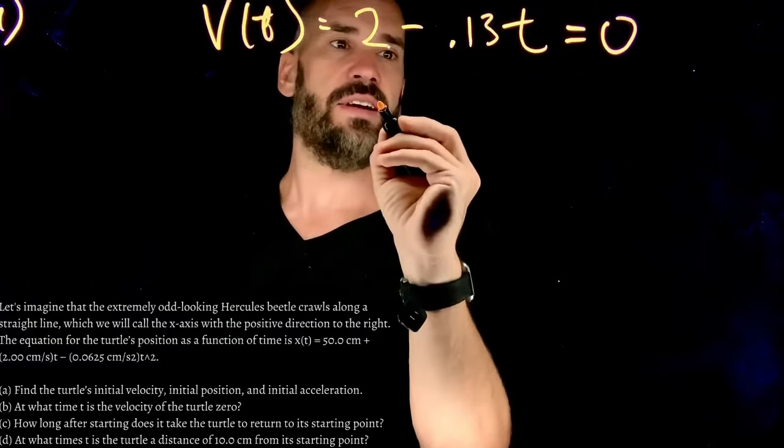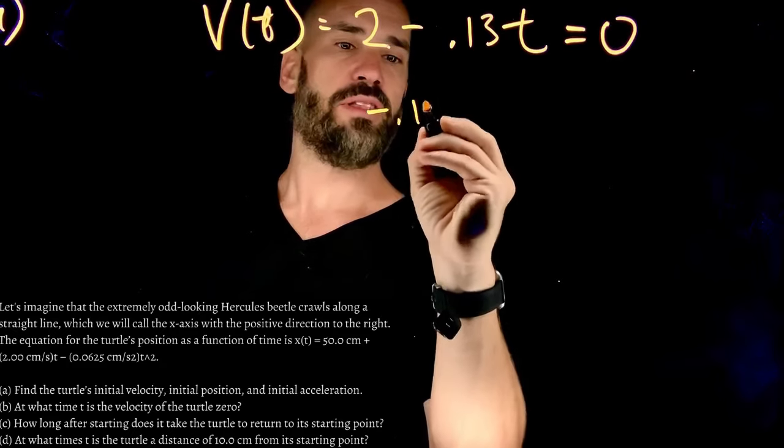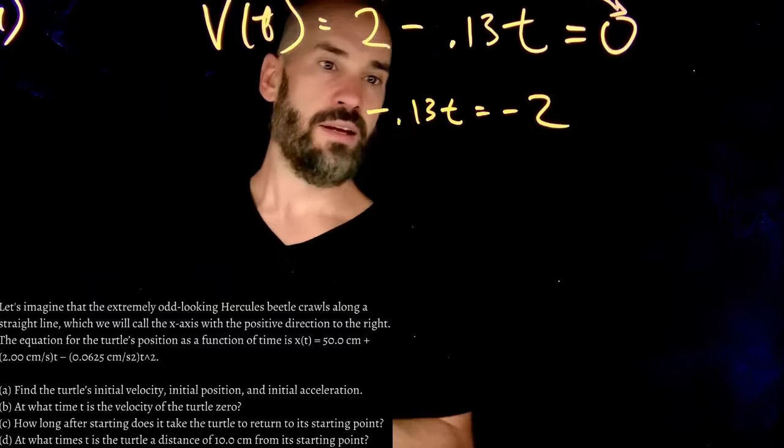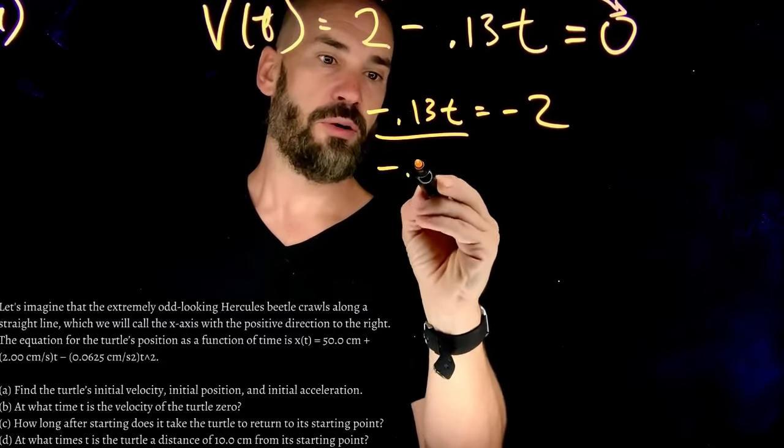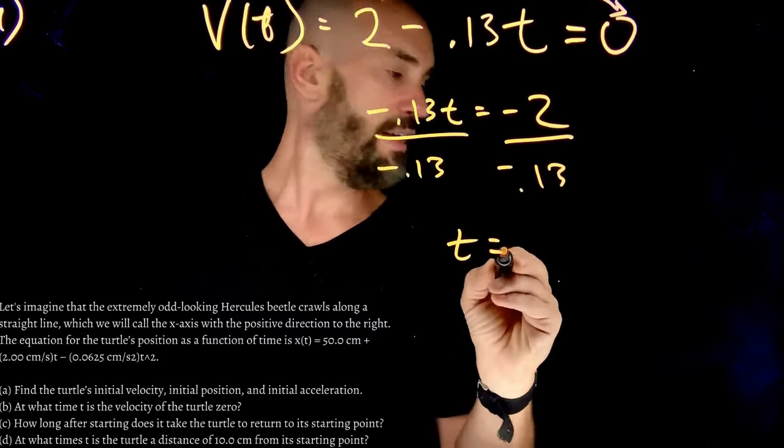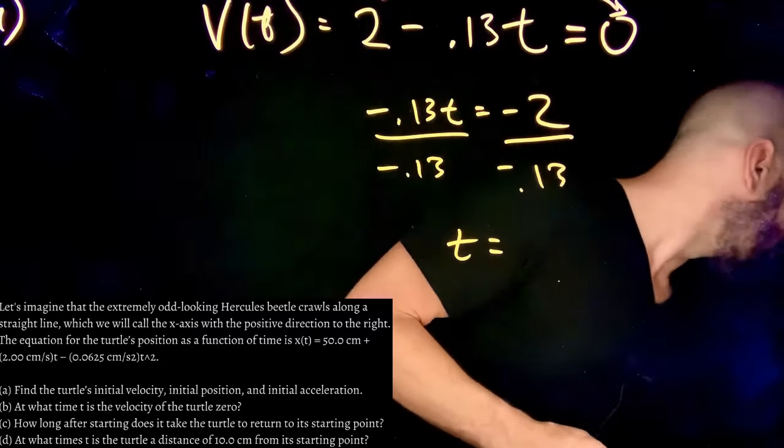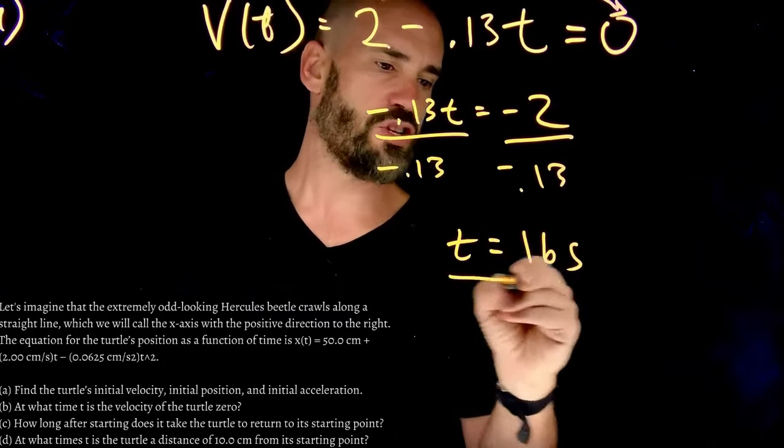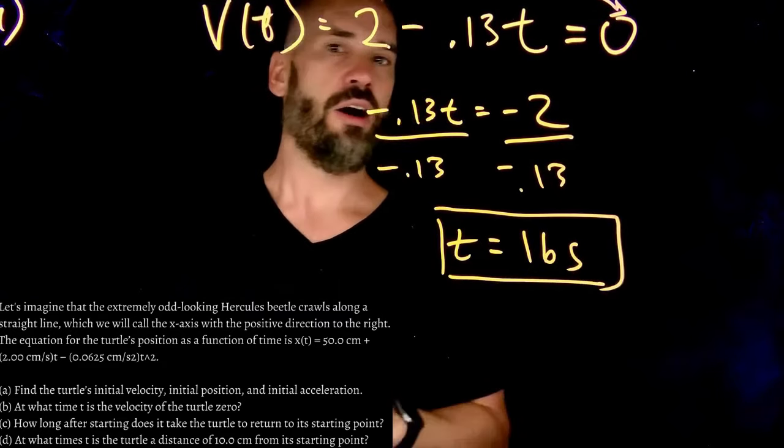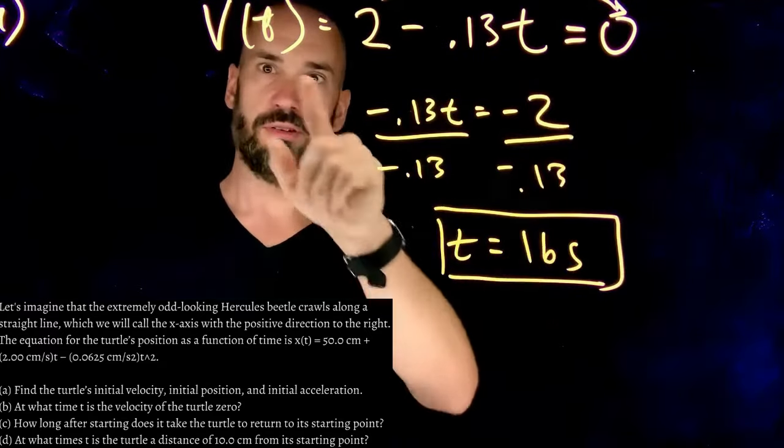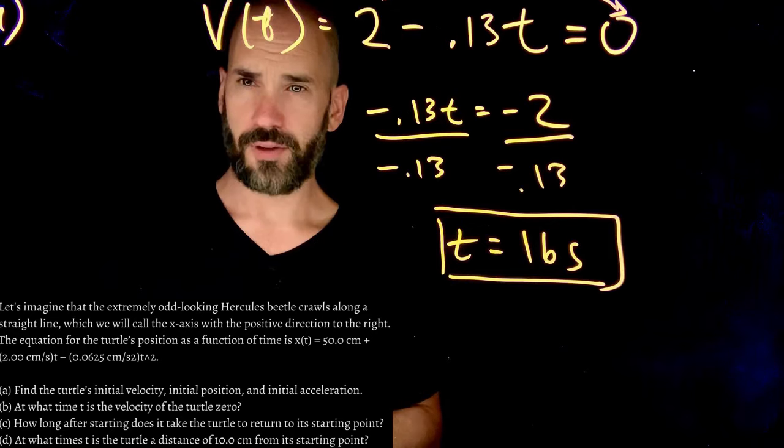So in this case, I have negative 0.13 t equals negative 2, because I'm bringing this 2 over to the other side. Divide both sides by negative 0.13, and I get t equals... What do I get? I don't know. 16 seconds. Feel free to check me on that. But according to this guy, it takes 16 seconds for this Hercules beetle to come to rest, to have a 0 velocity.